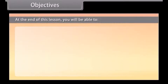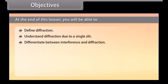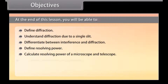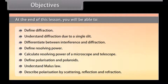At the end of this lesson, you will be able to: define diffraction; understand diffraction due to a single slit; differentiate between interference and diffraction; define resolving power; calculate resolving power of a microscope and telescope; define polarization and polaroids; understand Malus's law; and describe polarization by scattering, reflection, and refraction.